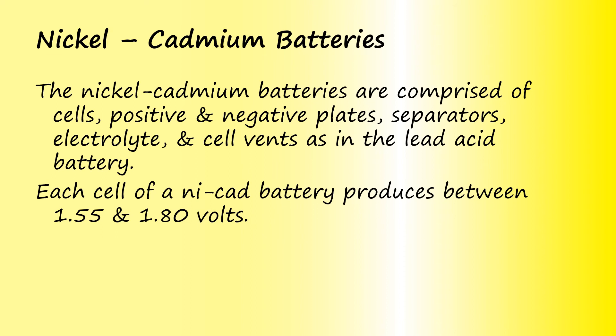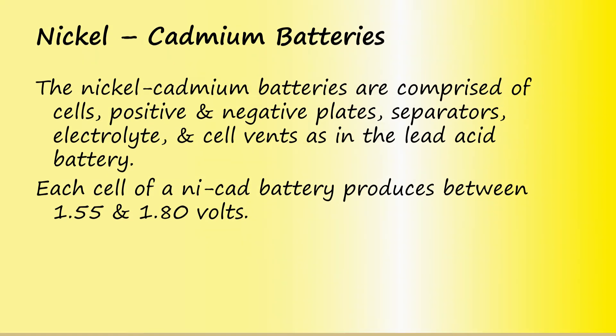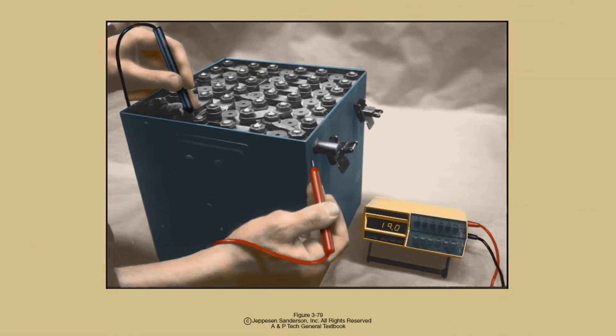NICAT battery cells are constructed in much the same way as our lead acid battery cells. Each cell is comprised of positive and negative plates, separators, electrolyte, and cell vents as in the lead acid battery. Each cell of a NICAT battery produces between 1.55 and 1.8 volts. Pictured here is a typical NICAT battery. Unlike lead acid batteries, NICAT battery cells are built individually and can be replaced when one goes bad rather than having to replace the entire battery.